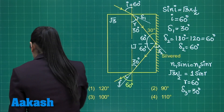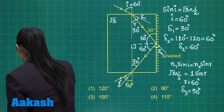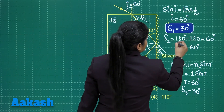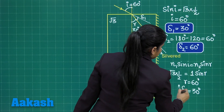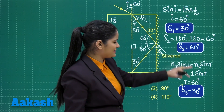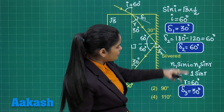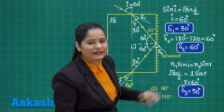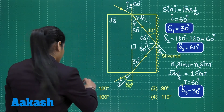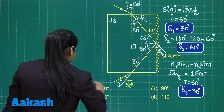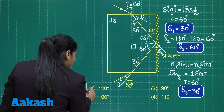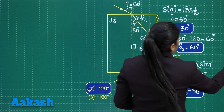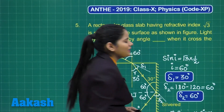Delta 1 = 30°, delta 2 = 60°, delta 3 = 30°. The total deviation is 30 + 60 + 30 = 120 degrees. So the correct option is option number 1. I hope this question is also very clear to you.